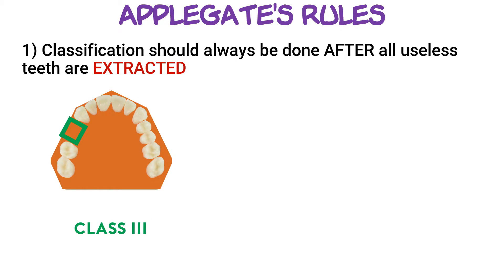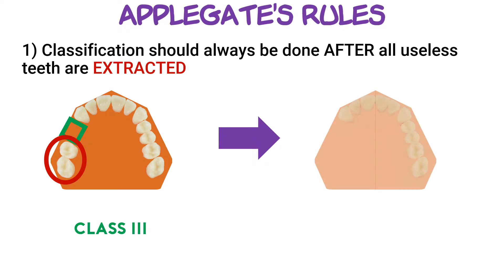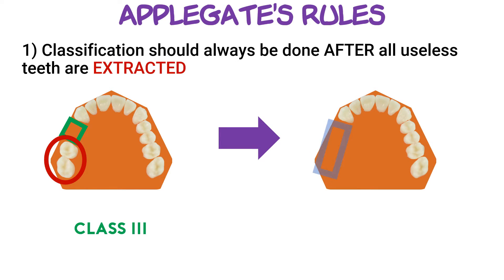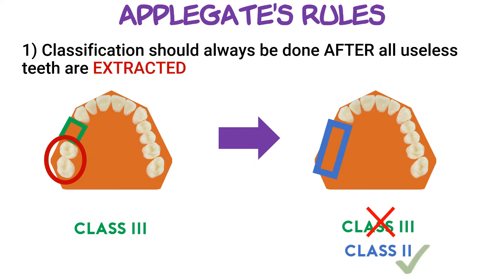However, if those back molars are due for extraction, we must take that into account and treat them as missing teeth before we make our classification. Thus, instead of our original Class 3 classification, we now have a unilateral edentulous base that's posterior to the rest of the teeth, which corresponds with the Class 2 classification.